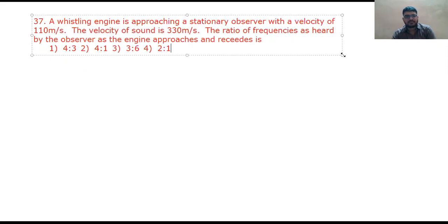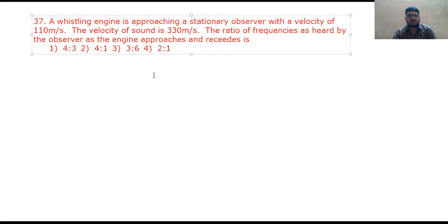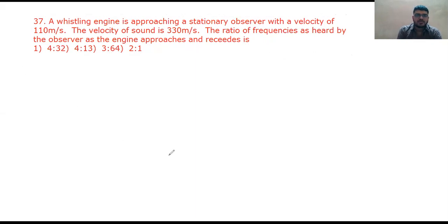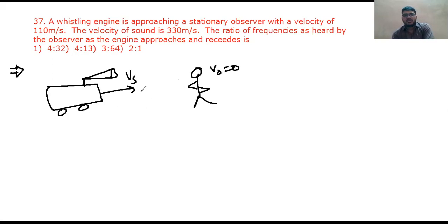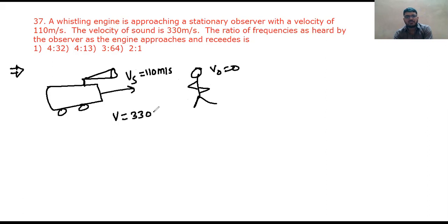This is the second question. A crystalline engine is approaching a stationary observer. The source velocity Vs is given as 110 meter per second. Velocity of sound V equals 330 meter per second. The question asks for the ratio of frequencies as heard by the observer as the engine approaches and then recedes away.